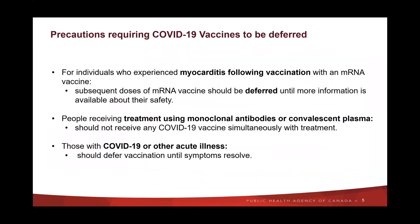In addition to outright contraindications to COVID-19 vaccines, there are precautions that may indicate delaying or avoiding the vaccine for the time being. For individuals who experience myocarditis following vaccination with an mRNA vaccine, subsequent doses should be deferred until more information is available about the safety of giving further doses. It's possible that more information will emerge that indicates it is safe to administer mRNA vaccines to these individuals, but until that time, they should not be given. People undergoing treatment with monoclonal antibodies or convalescent plasma are not recommended to get the vaccine while undergoing treatment, as it may reduce the effectiveness of the vaccine or of the treatment. Appropriate timing of these products in relation to one another is not well known at this time, and expert clinical opinion should be sought on a case-by-case basis.